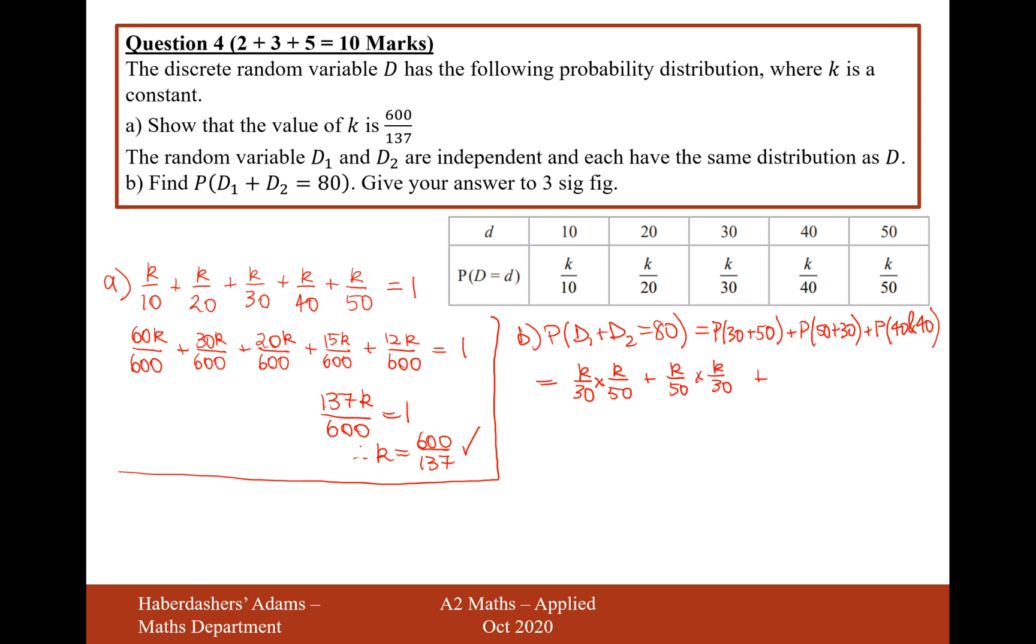The next one is going to be k over 50 times k over 30. And then we're going to add the probability of 40, k over 40 times k over 40. So let's now calculate this. It's going to be k squared over 1500, add k squared over 1500, add k squared over 1600. I think this is the point now where we're going to get our calculator to do the rest of this calculation. And it's going to be 0.0376. So there we are. That's the answer for part B.